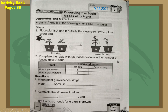Number two: complete the table with your observation on the number of leaves after seven days. Look at the table. Plant A gets water every day; Plant B gets no water every day. On the first day, Plant A has four leaves and Plant B also has four leaves. After seven days, Plant A has eight leaves — one, two, three, four, five, six, seven, eight. Plant B has only three leaves.